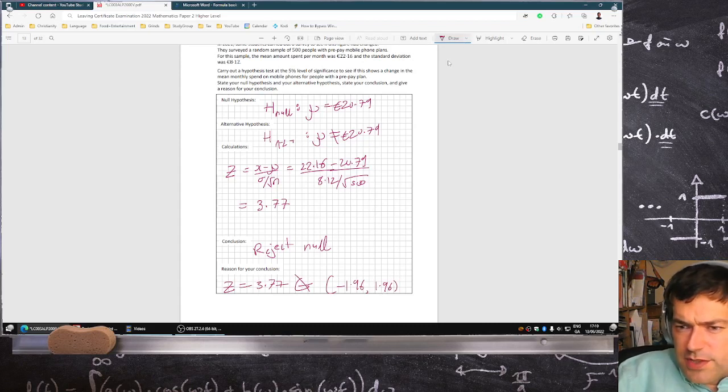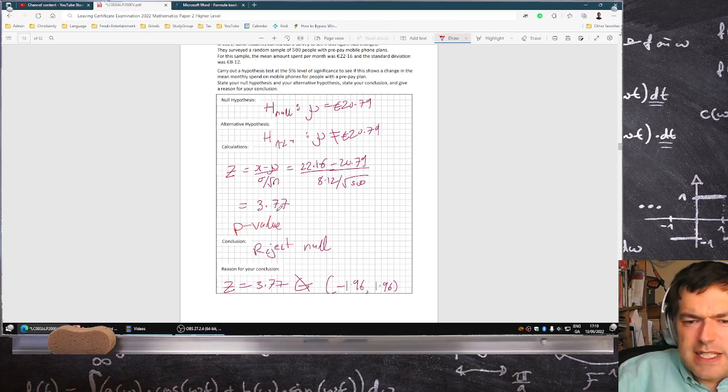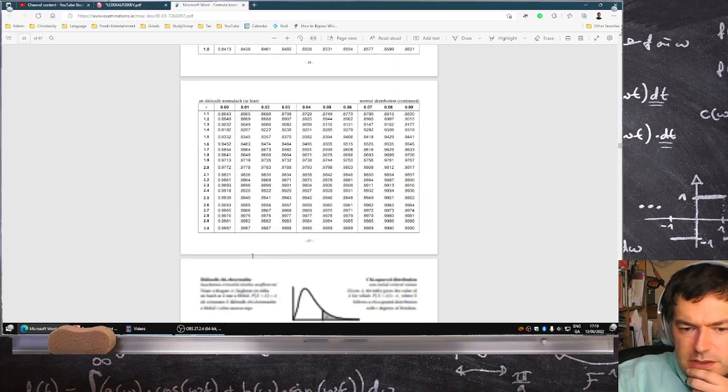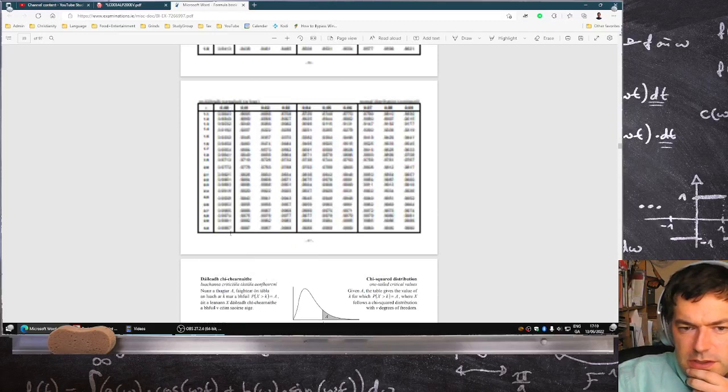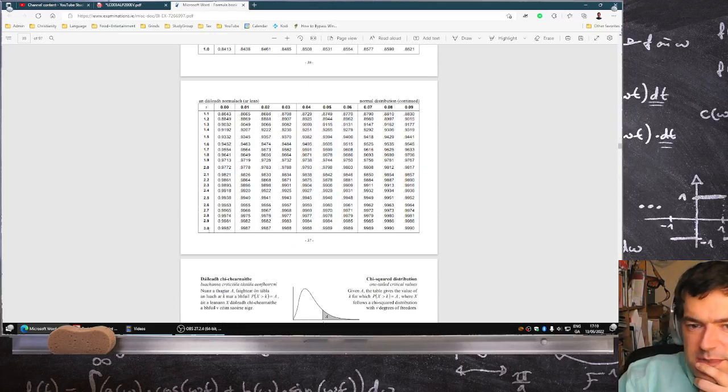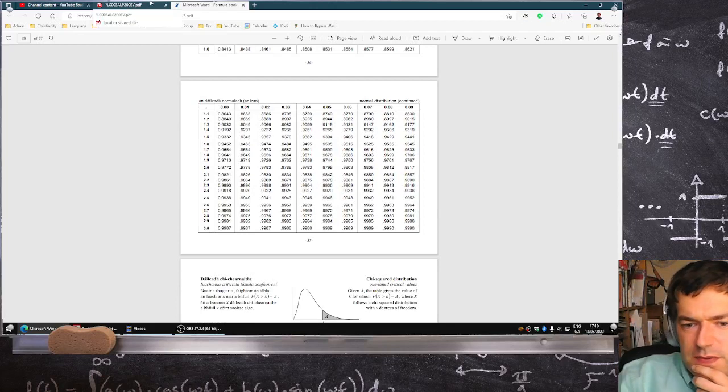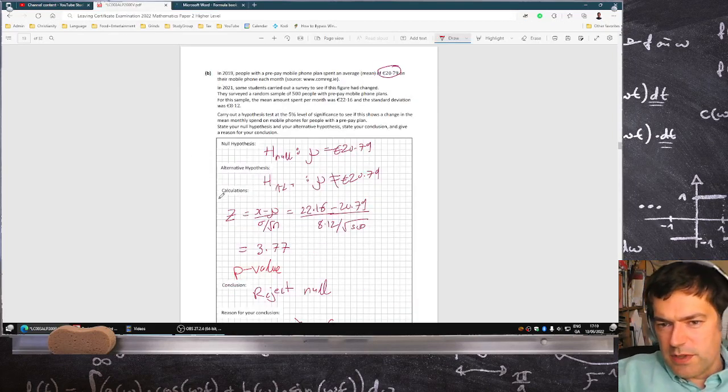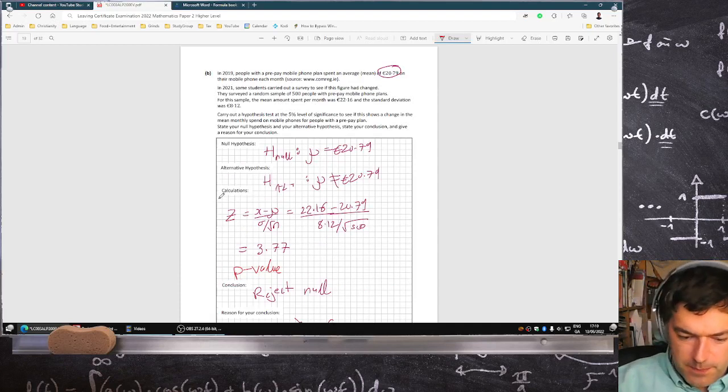By the way, some students may want to go ahead and calculate the p-value here. But I'm not sure if you can because 3.77 is quite large. I'm not sure if the table book goes that high. It doesn't. It stops at 3. Oh, that's very mean of them. That makes me wonder if I made a mistake. Let's double check it.